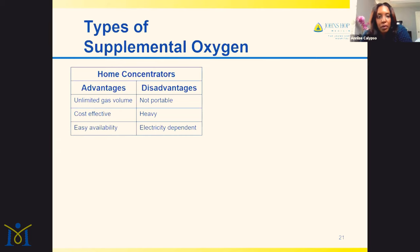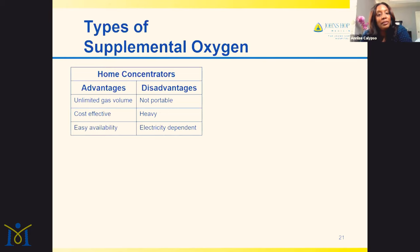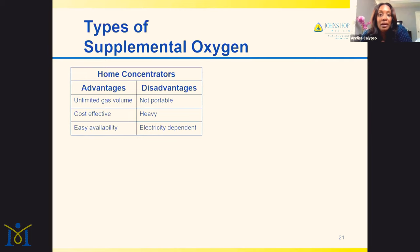Home concentrators are a stationary unit that goes in your home. The advantages are that they deliver unlimited gas volume, they're cost effective, and they're readily available by every oxygen company in the U.S. and pretty much worldwide. The disadvantages are they're not portable, they're rather heavy, and they're electricity dependent. You need to alert your electrical company that you have oxygen so that if there's a power outage, you're one of the first people to get service restored.